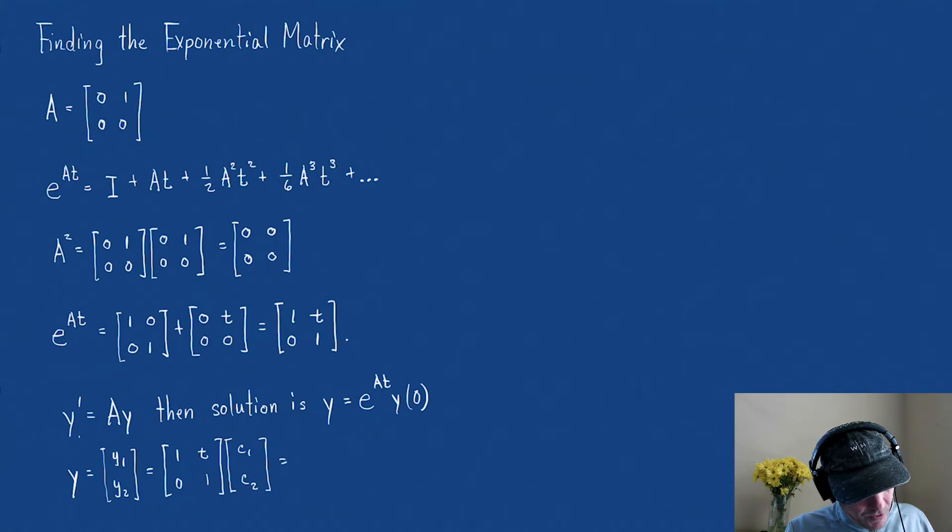Well, if you multiply this out, this is [c₁ + c₂t, c₂]. Now you might think, well, that doesn't seem that significant.